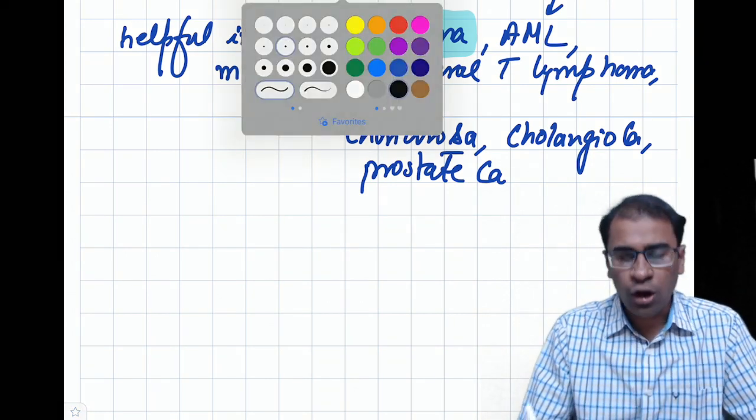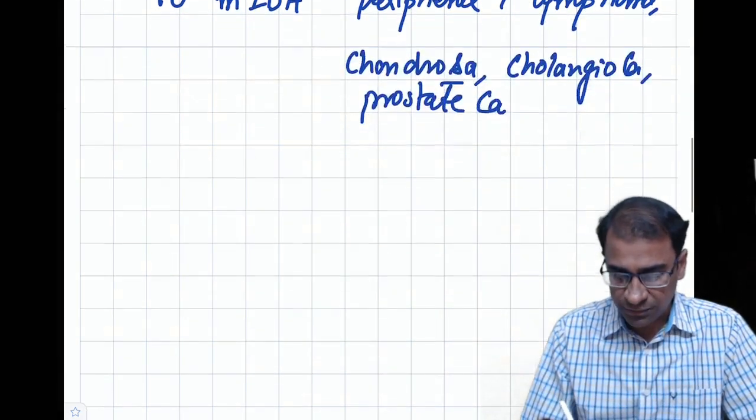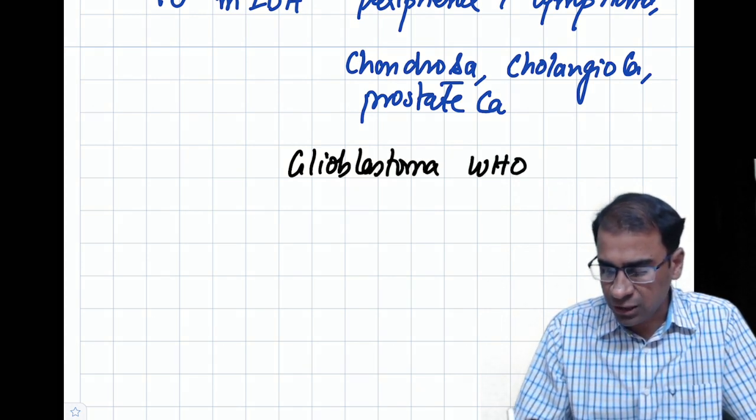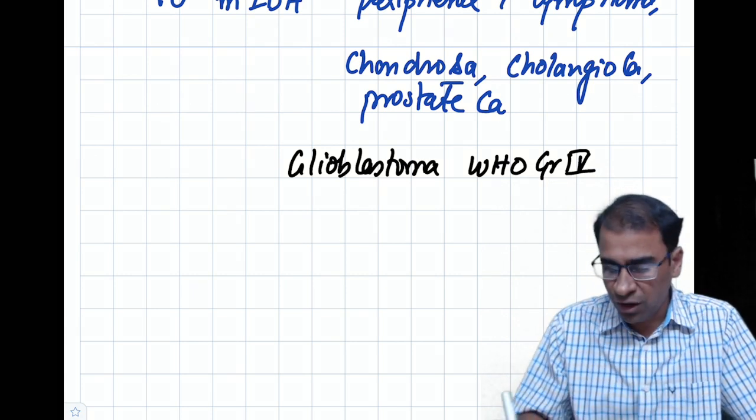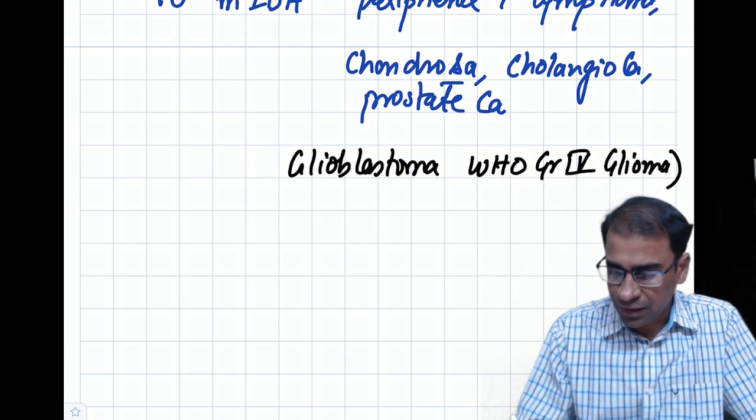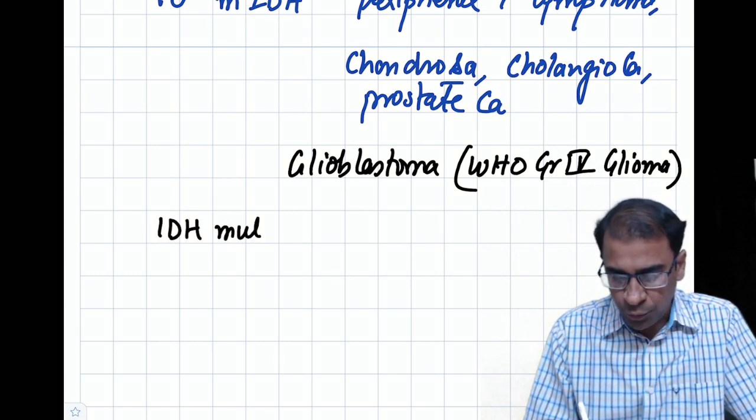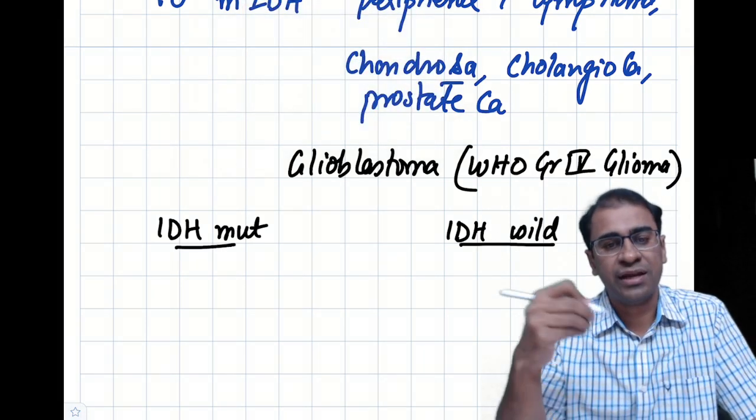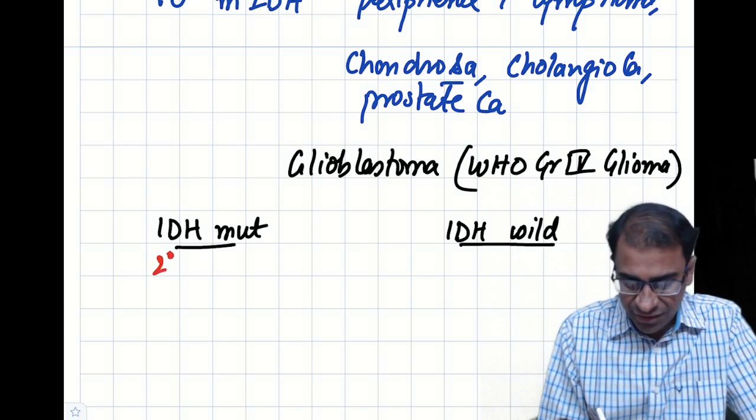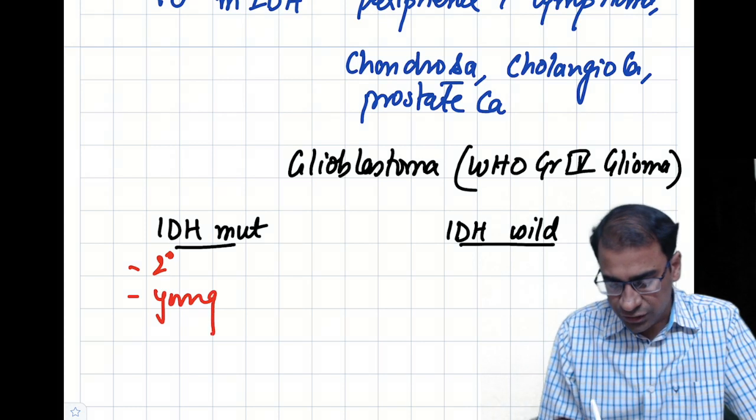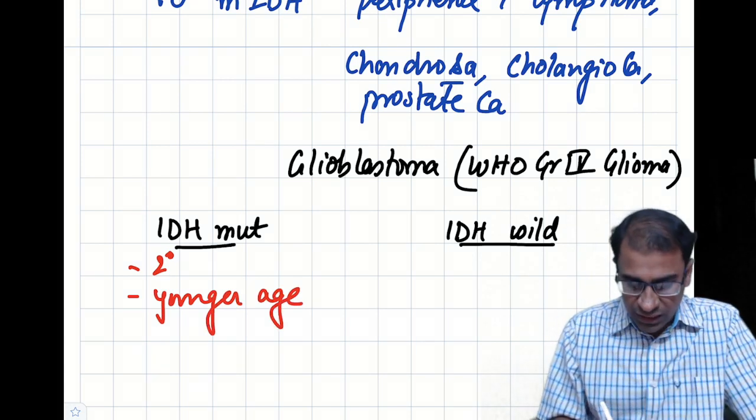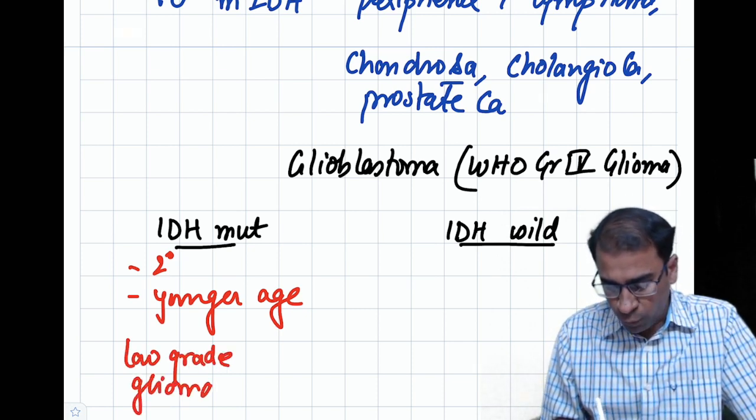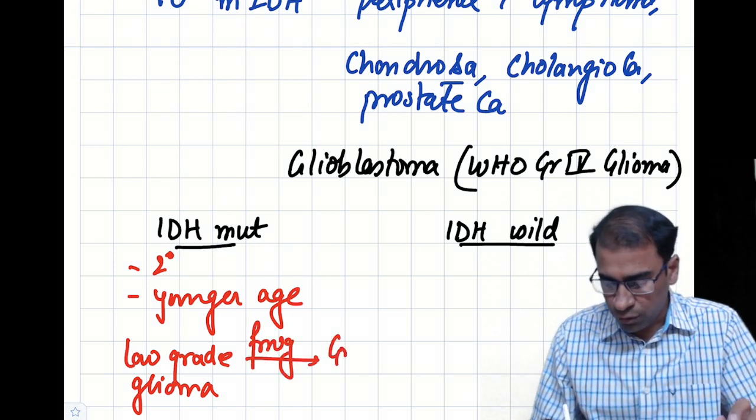Among them, I should not miss gliomas because this is a definite breakthrough. Let us talk about glioblastomas. Glioblastoma is a World Health Organization Grade 4 brain tumor. The glioblastoma IDH mutated form is called secondary and is seen in younger age. This type of tumor is where low grade gliomas have progressed to grade 4.